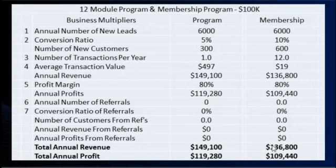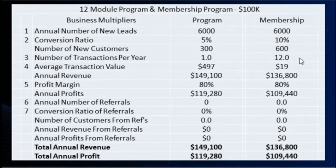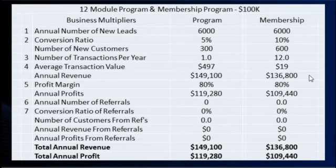Now let's look at a membership program — you need both a membership program and an online program. With the same 500 pre-qualified leads and a 10% conversion, you'd have about 600 people in your membership program paying monthly. At $19 a month — I'm making the amounts really low so you can say 'I can do that' — that's $136,000. At 80% profit margin, you can generate at least $100,000 doing a combination of both.